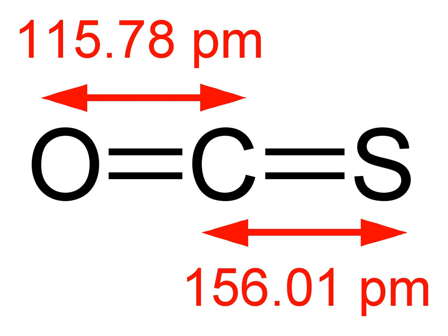A laboratory synthesis entails the reaction of potassium thiocyanate and sulfuric acid. The resulting gas contains significant amounts of byproducts and requires purification. Hydrolysis of isothiocyanates in hydrochloric acid solution also affords COS.